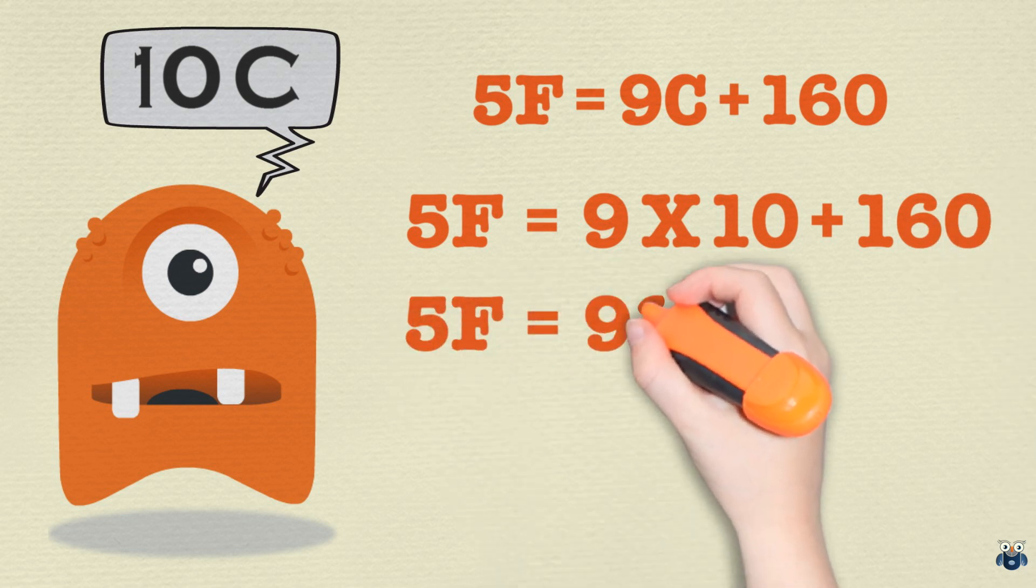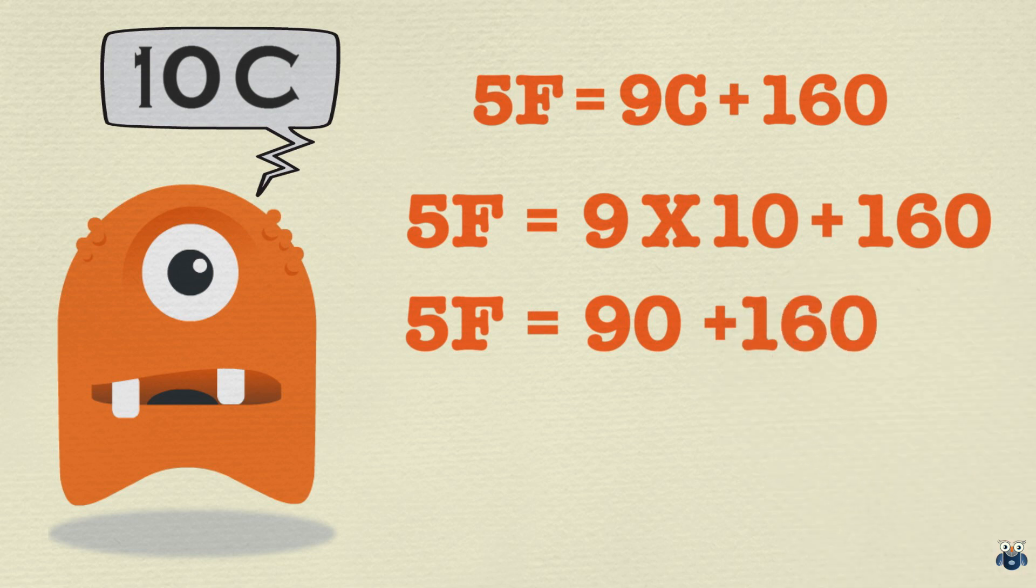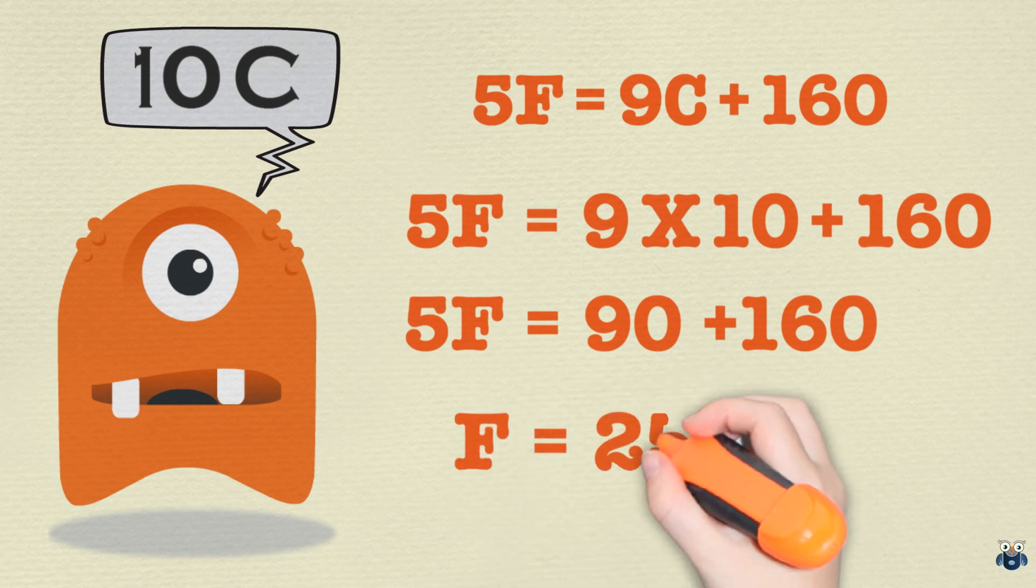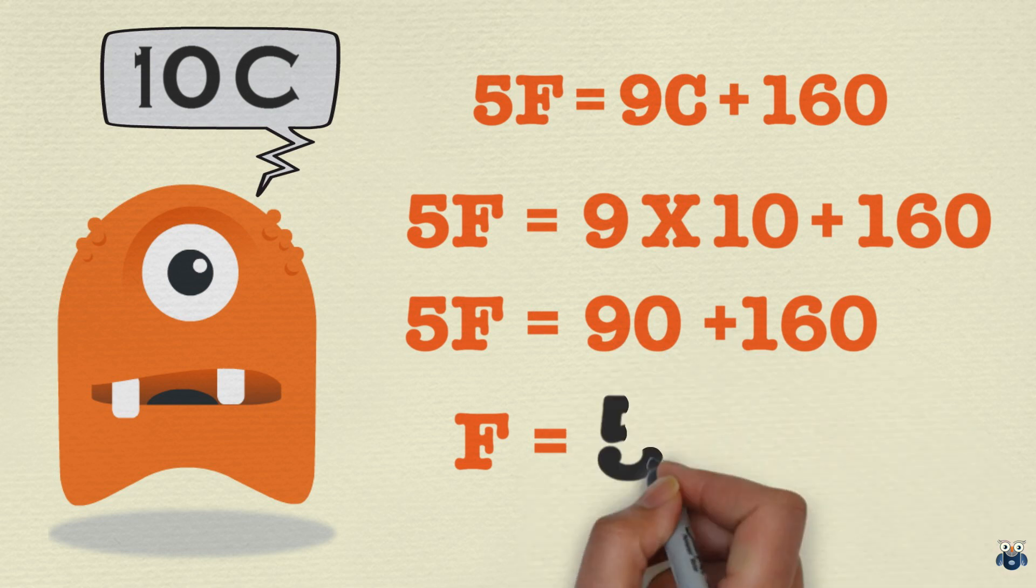Or 5F equal to 90 plus 160, which is equal to 250. So the value of F is 250 divided by 5, which is 50 degrees Fahrenheit.